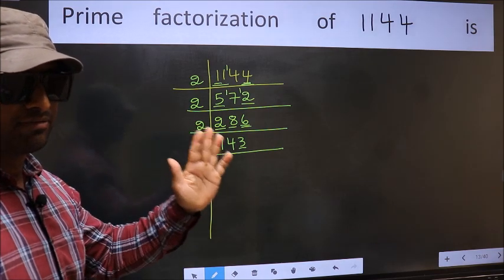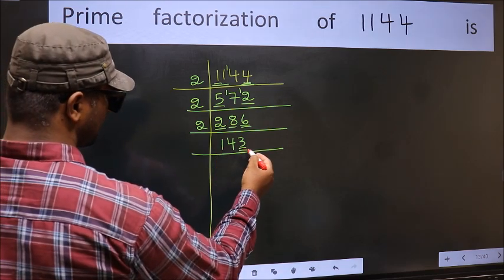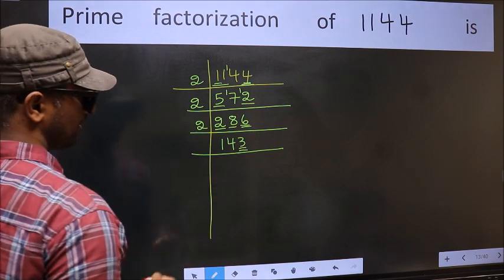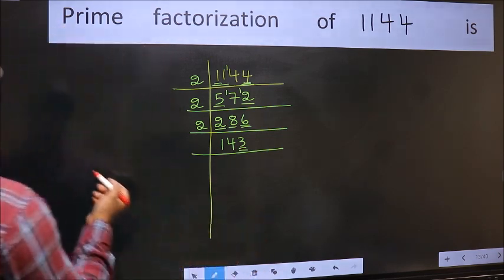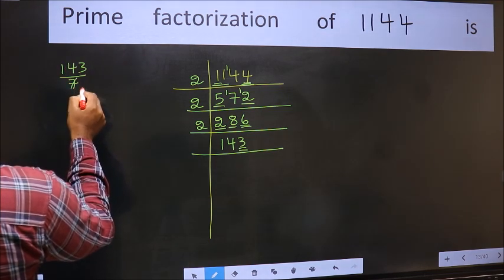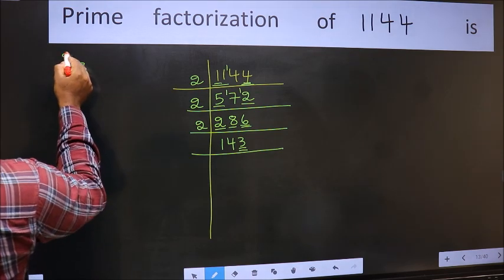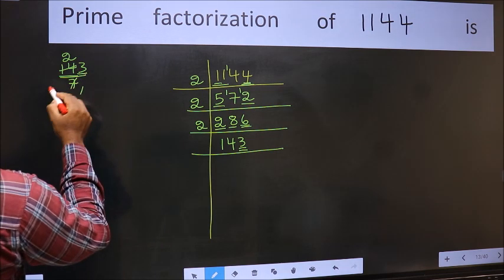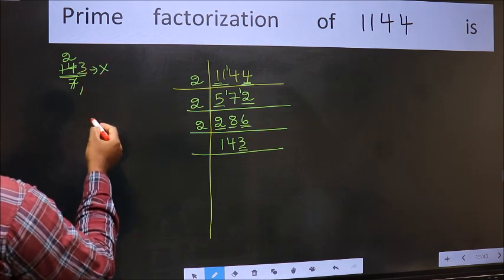Next prime number is 5. The last digit is neither 0 nor 5, so this is not divisible by 5. Next prime number is 7. Let us check divisibility by 7: 143 divided by 7. When do we get 14 in the 7 times table? 7 twos are 14. We don't get 3 in the 7 times table, so 3 is left out. Therefore, this is not divisible by 7.